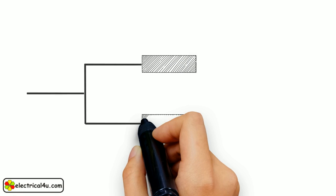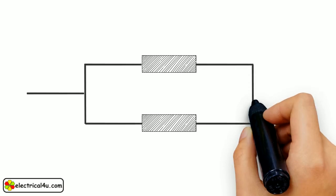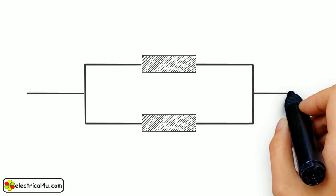Actually, this rule finds application when we have to find the current passing through each impedance when these are connected in parallel.